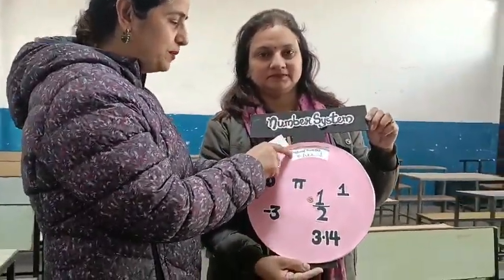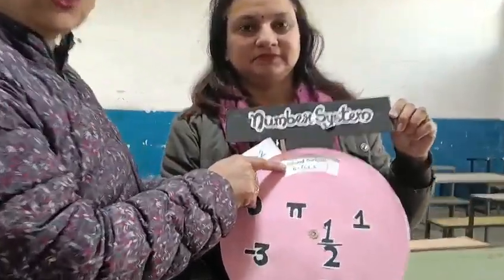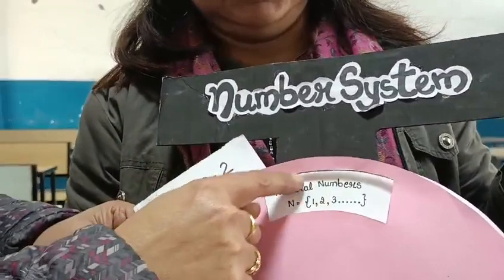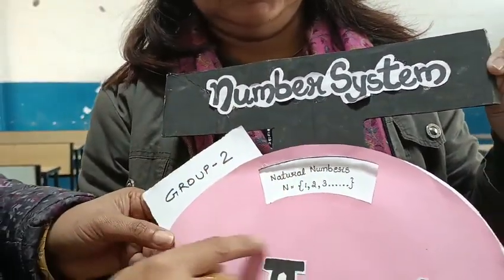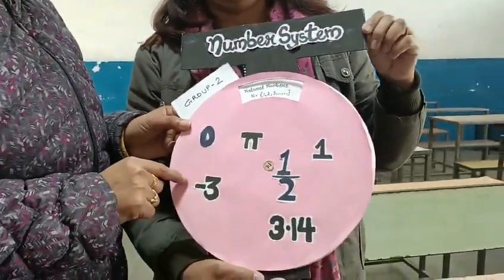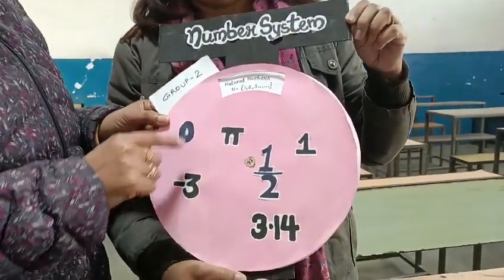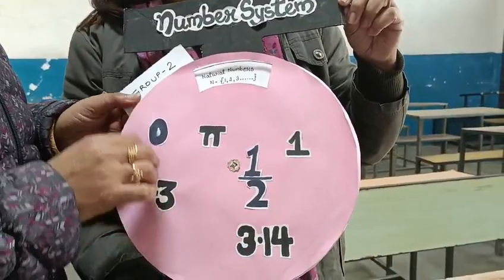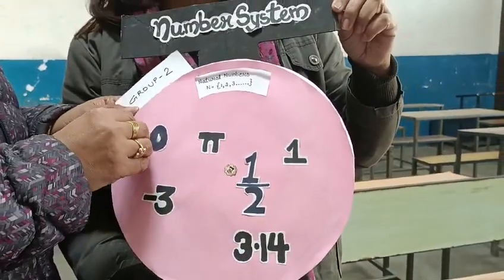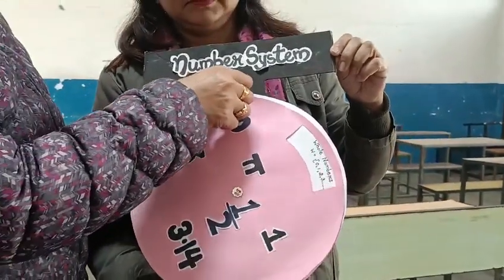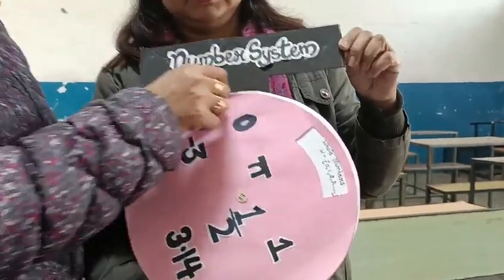We have shown a natural number here, so the child will identify the natural number between them. The child will look at it, then we will call some other child and ask him to spin.